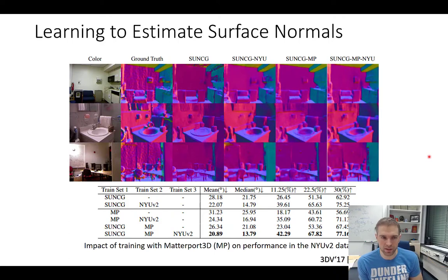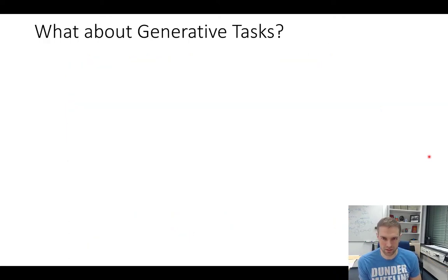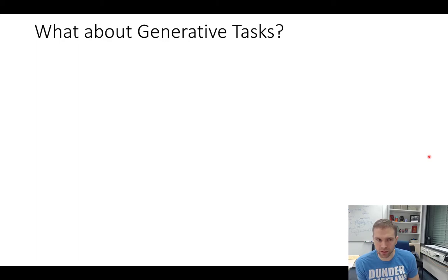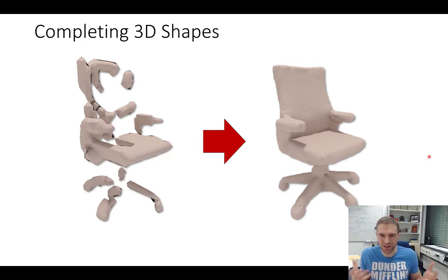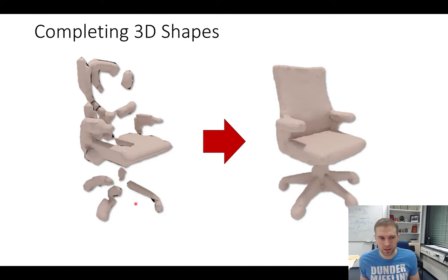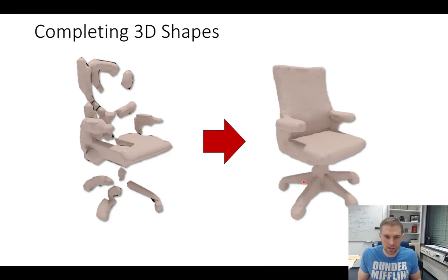I'd like to talk about generative tasks. In computer vision, computer graphics, and machine learning, we often talk about reconstruction problems for 3D data. One specific task we've been working on for quite a while is the completion of 3D shapes, because we would love to capture 3D environments, have digital replicas of the real world, understand and memorize them. In the simple task of completing 3D shapes, we have a partial 3D reconstruction of an object and want to train a neural network to produce a completed version.